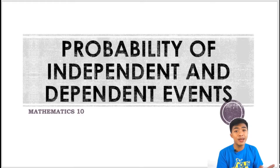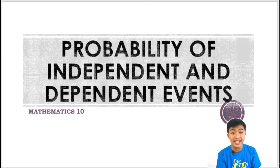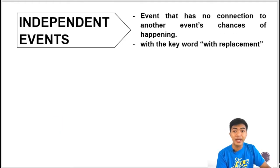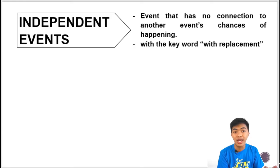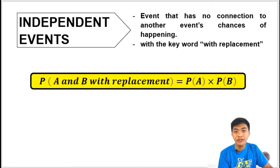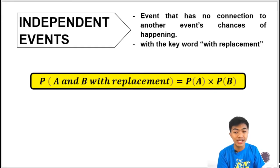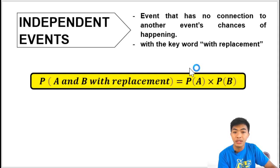Sometimes a problem will be asking us to solve for the probability if we will be getting two items from a set of items. So we have what we call independent events, and these are events that have no connection to another event's chances of happening. It usually has the keyword 'with replacement.' This is the formula we will be using: the probability of event A and event B with replacement is equal to the probability of event A times the probability of event B.